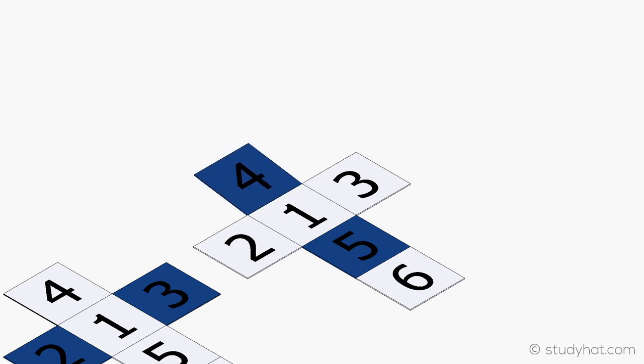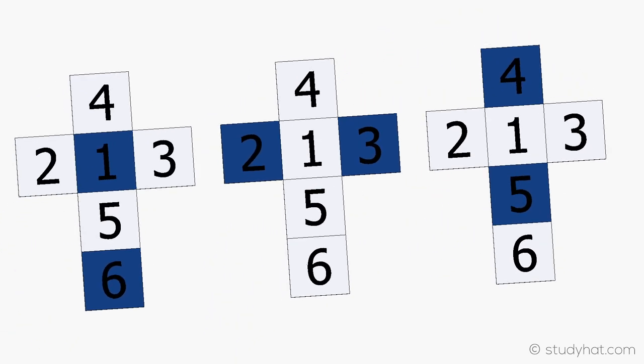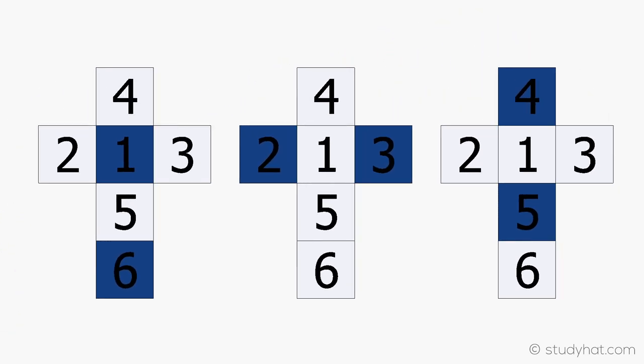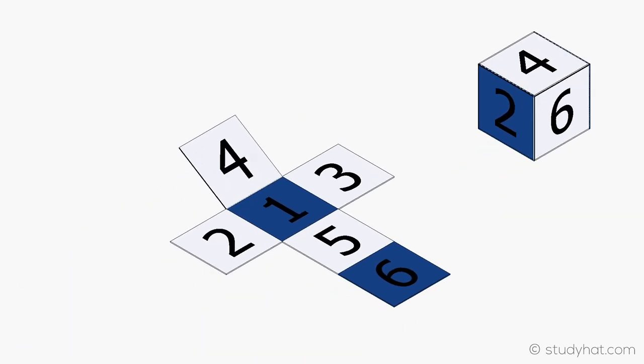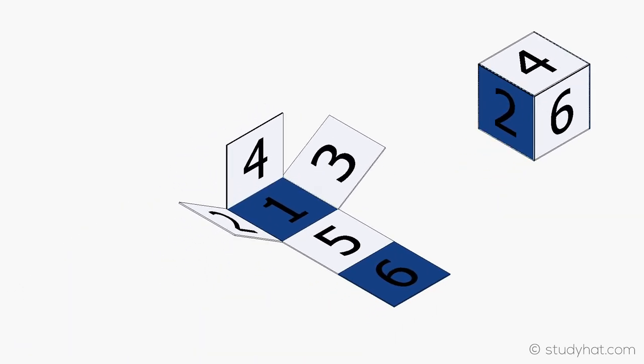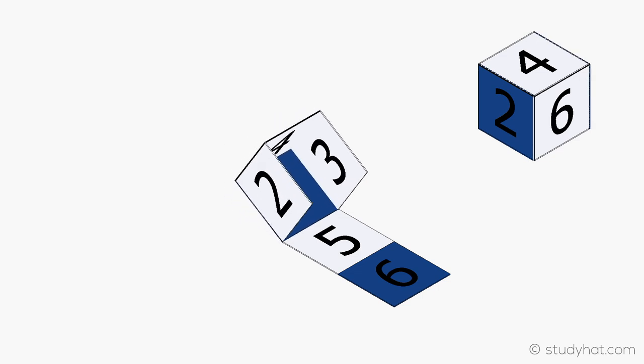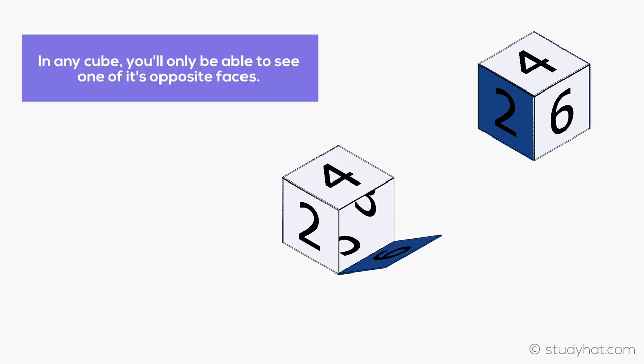What this shows is that if you have two opposite faces, you will only be able to see one. When folding 1 and 6, you can only end up seeing one out of the two faces. You will never see 1 and 6 together, as they are meant to be on opposite ends, so this is a great method to remember for the exam.